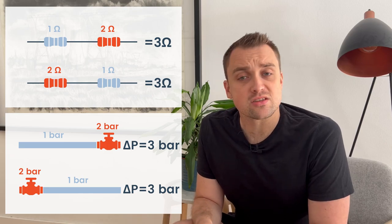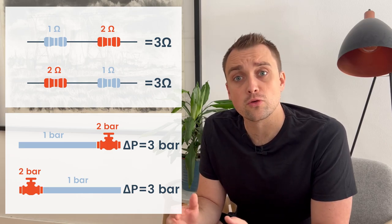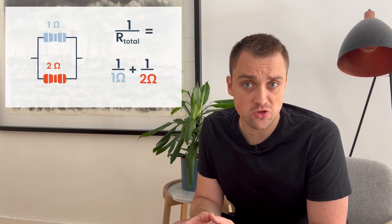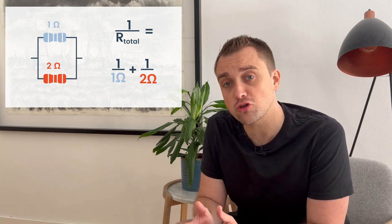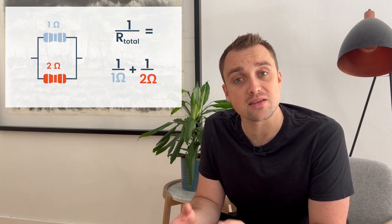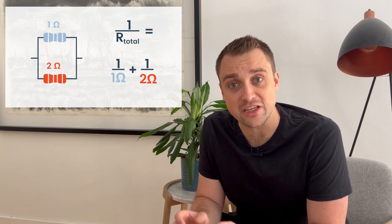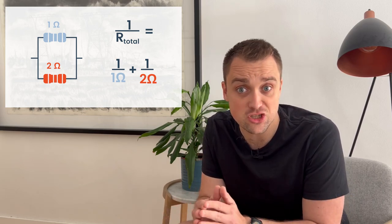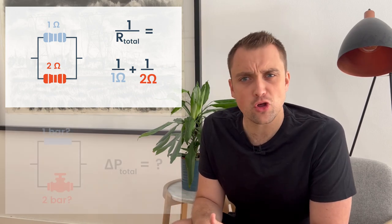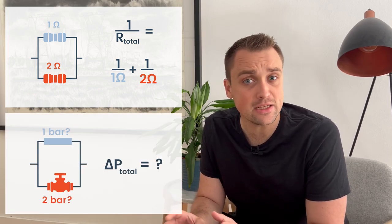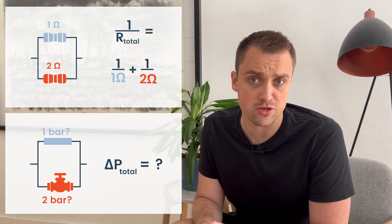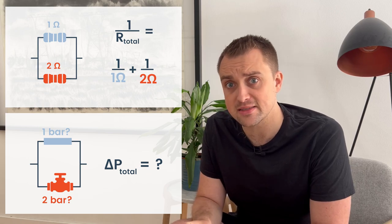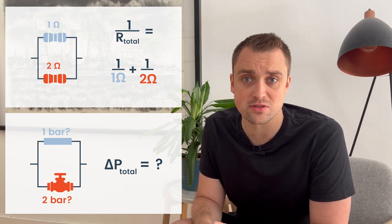But things get a bit stickier when we start analyzing fluid flow and pressure drop through parallel branches in a circuit. With electrical circuits we have a very useful equation that says the inverse of the total circuit resistance is equal to the sum of the inverse of each individual resistance, each individual branch's resistance. With fluid flow we don't have a similar neat looking equation for pressure drop and flow through parallel branches. Today we're going to look at why that's the case and how you analyze these sorts of circuits.